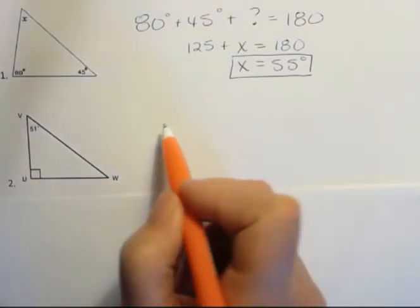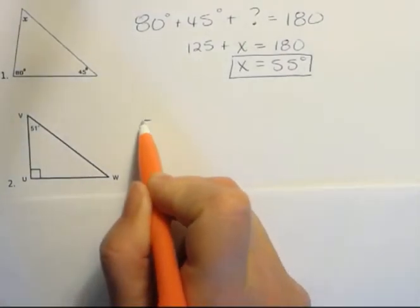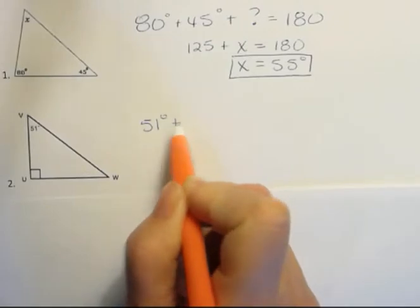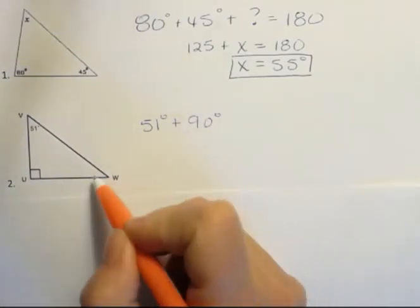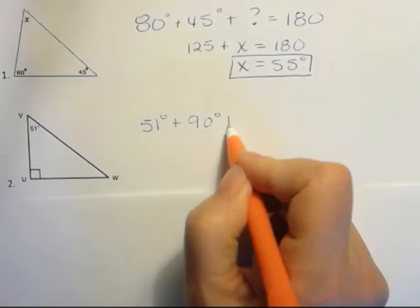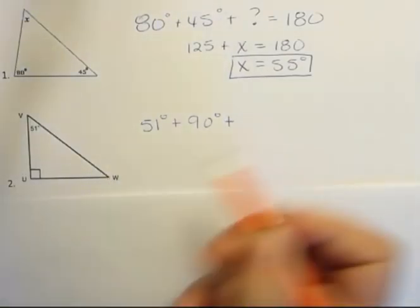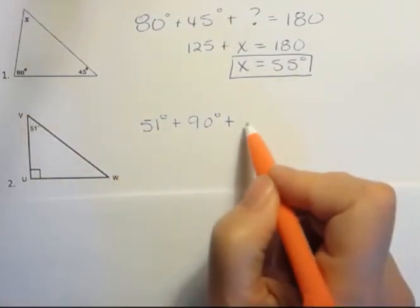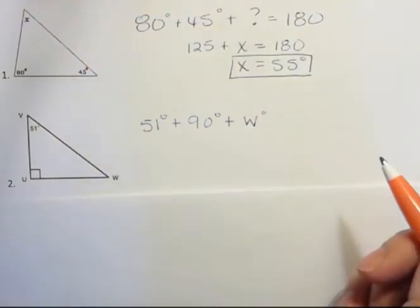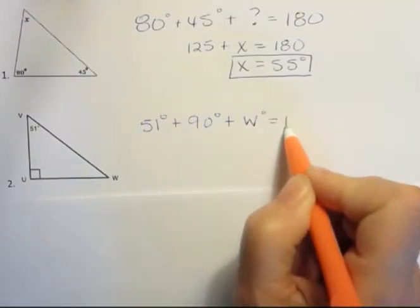So what we need to do is say, okay, I actually know I have a 51 degree angle and I have a 90 degree angle. And then they didn't give this angle a letter, except I'm going to call it W because it's on the outside. What about the degrees of W would make that 180?